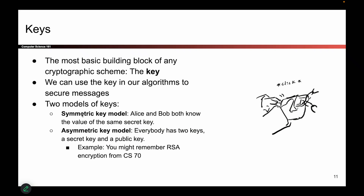By contrast, there's something called an asymmetric key model, where everyone has a private key and a public key that form a pair. We'll talk about that in a lot more detail later. If you want a preview, you might remember something called RSA encryption, which uses the asymmetric key model. For now, just note that a key is a secret value we use to secure our messages.